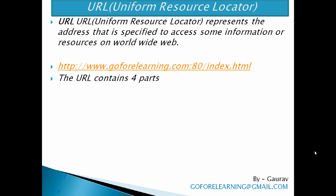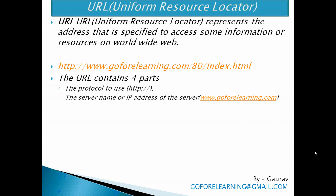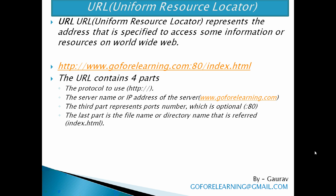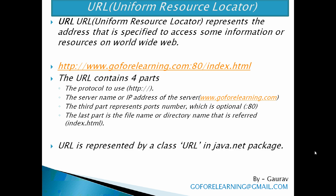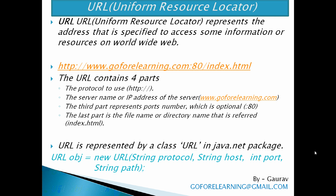The URL contains four parts: the protocol to use (HTTP), the server name or IP address (e.g., www.goforelearning.com), the port number which is optional (e.g., 80), and the file name or directory name referred to (e.g., index.html). URL is represented by the URL class in the java.net package. To create an object of URL, we use the format: URL obj = new URL(String protocol, String host, int port, String path).